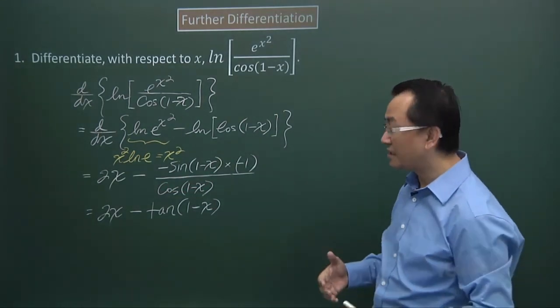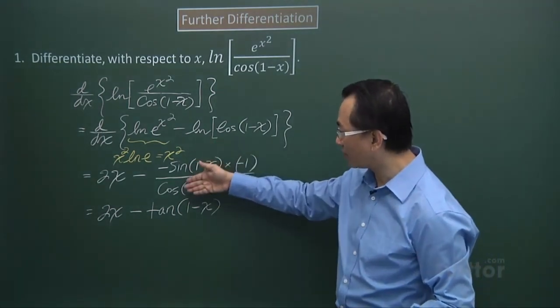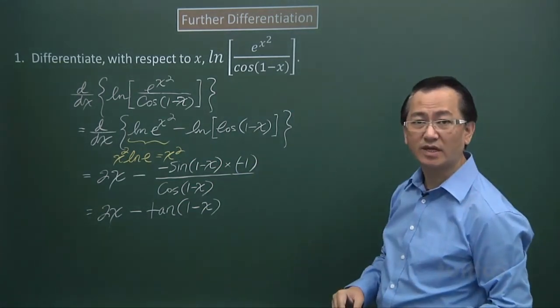Of course, we need some of these trigonometric identities as well. Like here, sine over cos, we have got tangent. So there are a couple of things within this question.